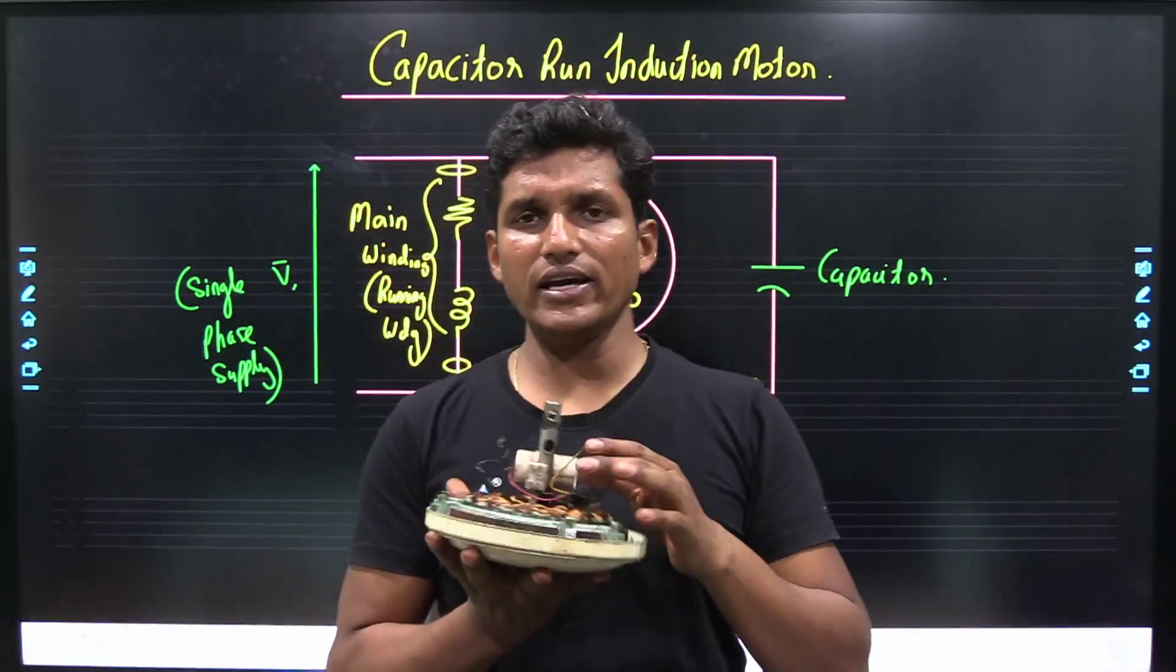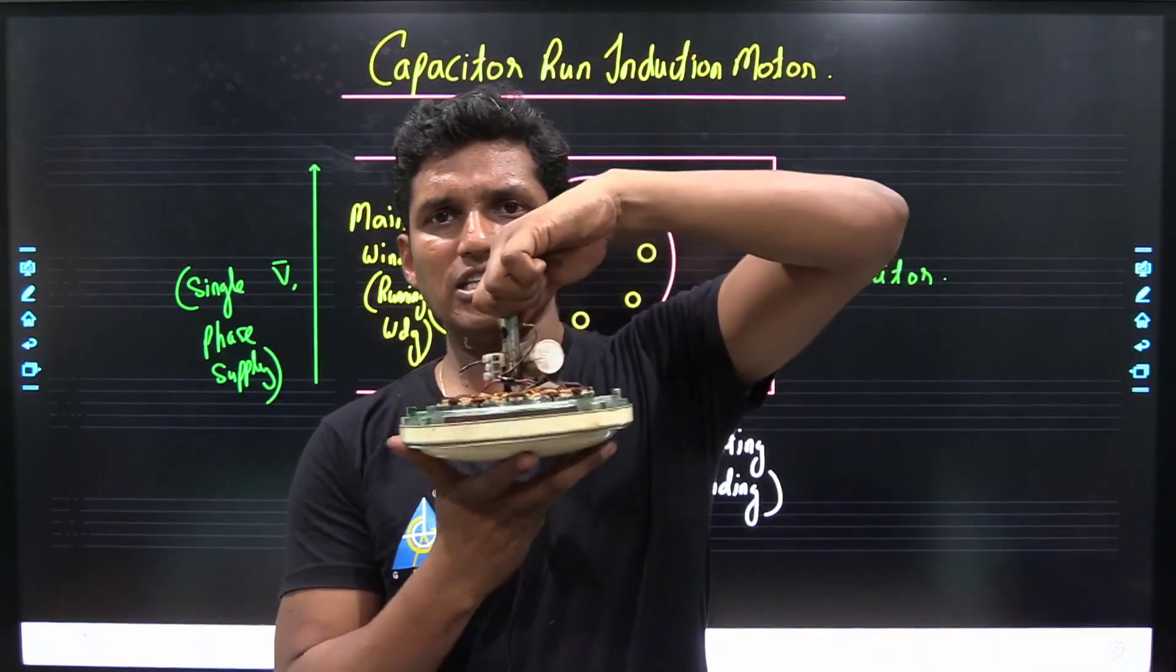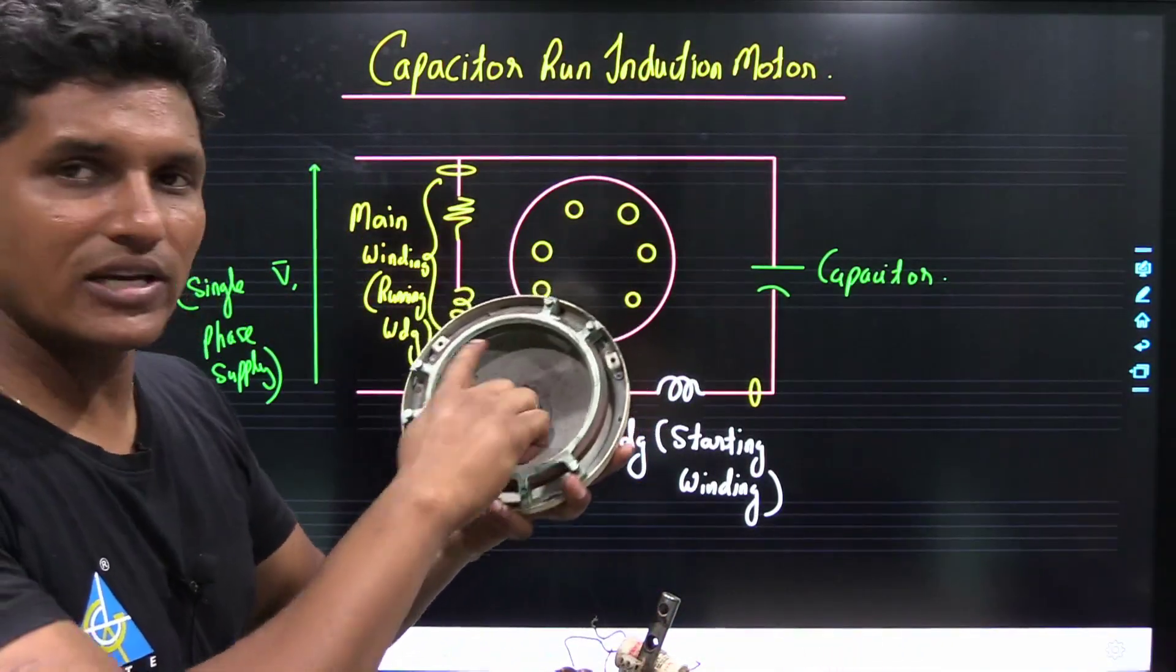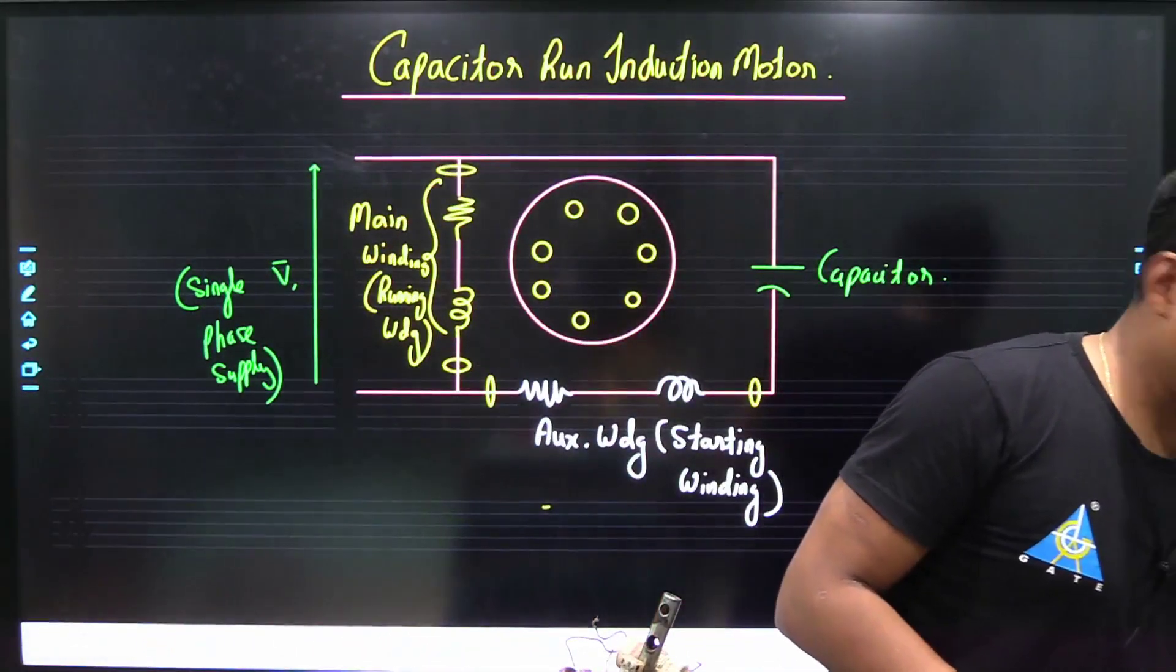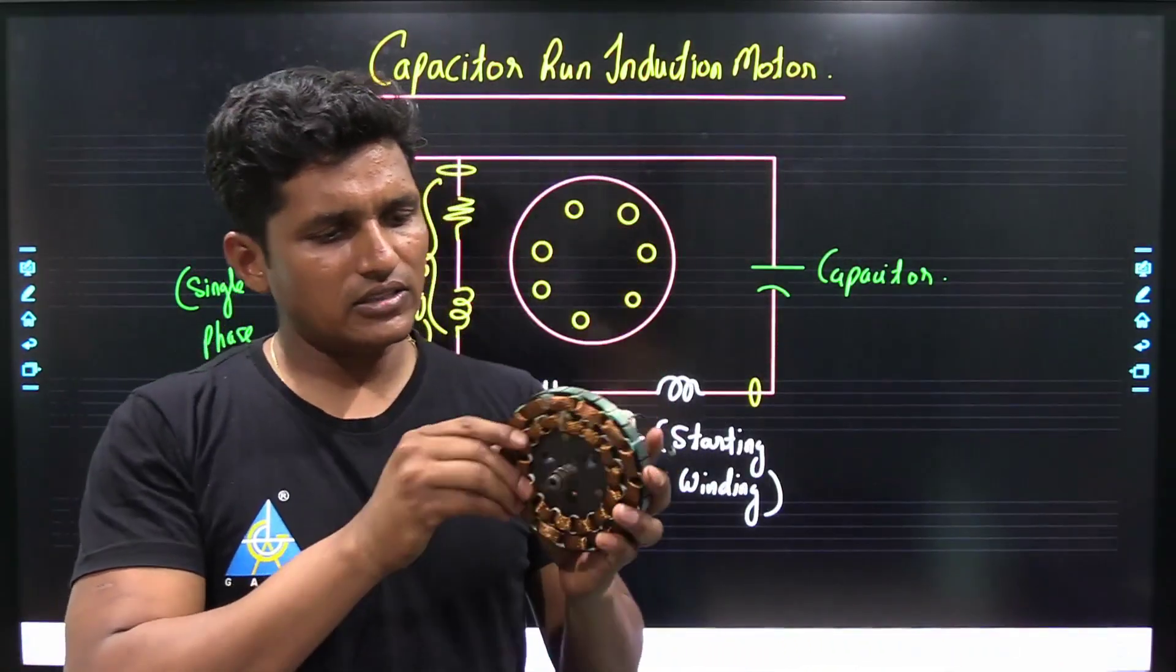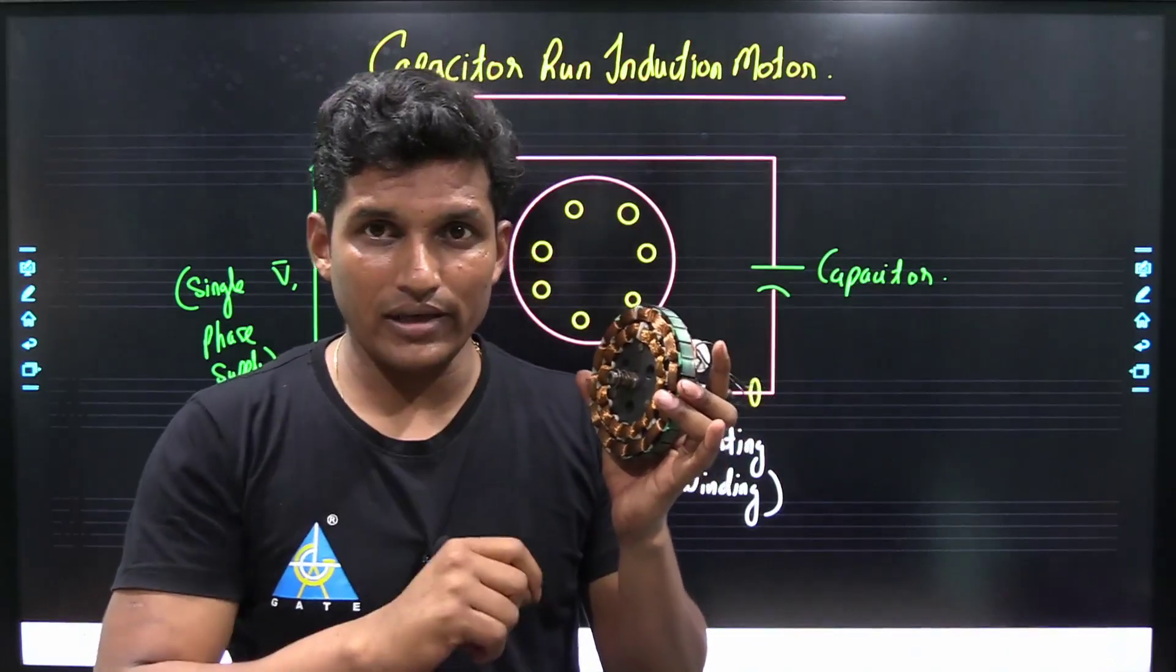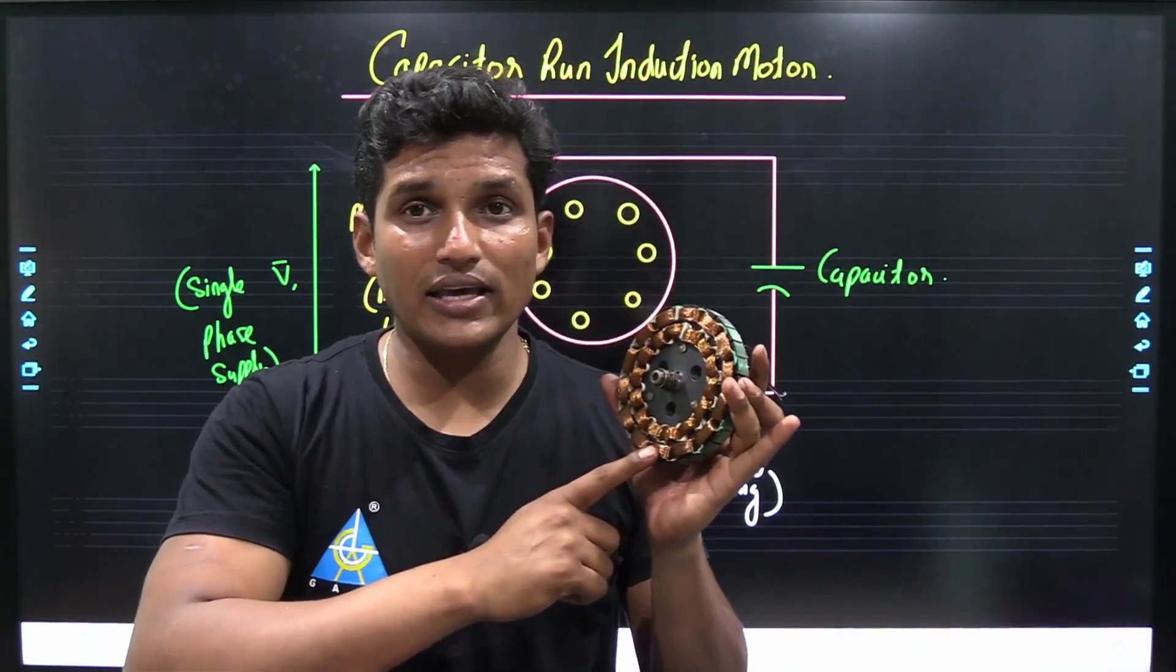Here we are having a ceiling fan in which this is the stator and this one is rotor of capacitor run induction motor. Now, this is the stator of this particular motor in which there are two windings. In the inner circle, that is the running winding or main winding, whereas in the outer periphery, that is where the starting winding is placed.